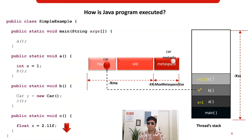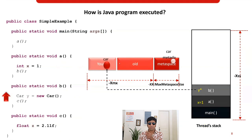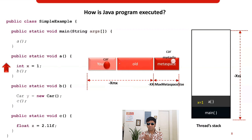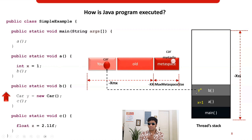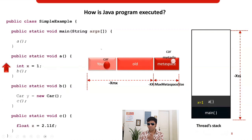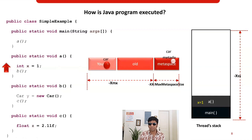Now the thread has executed all the methods and starts exiting. When it exits method C, C is removed from the thread stack. When it exits method B, something interesting happens: B and the local variable y pointing to the Car object are removed from the stack, but the Car object itself is NOT removed. The Car object will only be removed during the next garbage collection run — until then it remains resident in memory.